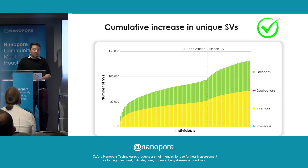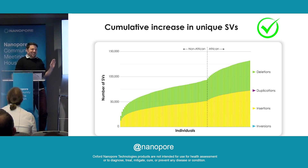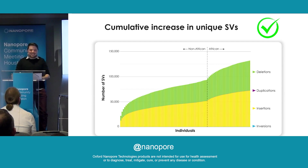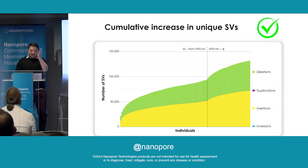One of the applications I've used for Jasmine is building a plot of the cumulative increase in unique structural variants across the samples analyzed so far. All the way to one side is the first individual with the expected 25,000 or so structural variants, and then each bar indicates structural variants that were not seen in the bar before. African ancestry samples are placed at the end because we would expect an increase in unique structural variants in those — which we see.